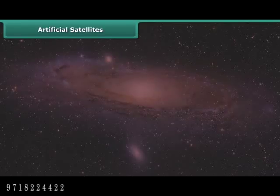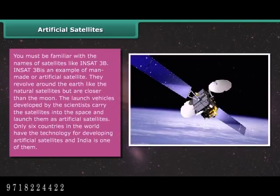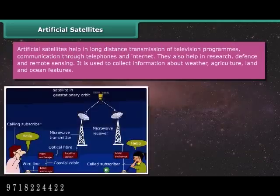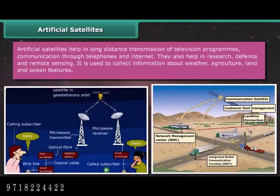Artificial satellites, such as INSAT-3B, are man-made satellites that revolve around the Earth like natural satellites but are closer than the Moon. Launch vehicles developed by scientists carry and deploy them into space. Only six countries in the world have the technology for developing artificial satellites, and India is one of them. Artificial satellites help in long-distance transmission of television programs, communication through telephones and the internet, research, defense, remote sensing, and collecting information about weather, agriculture, land, and ocean features.